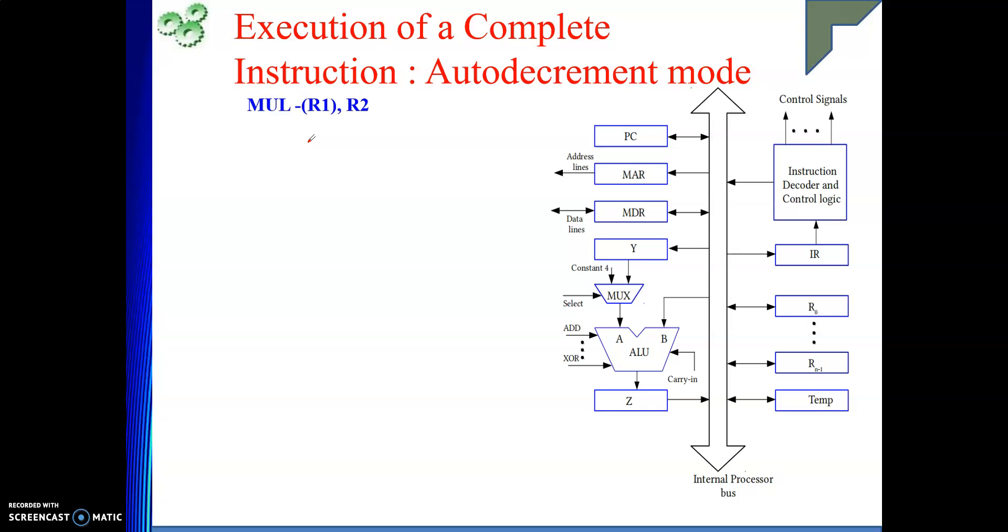Here my assumption is that each element is taking 4 bytes and the machine is byte addressable. First R1 will be decremented. Then whatever will be the value, that is my memory address. That I need to give to MAR. Then the read signal. Then I will wait. Then data will count. That data I will multiply with R2. And then finally result I will put back into R2. Let's start.